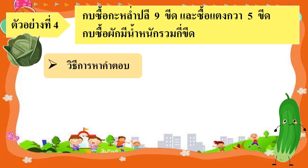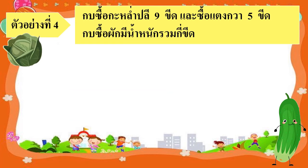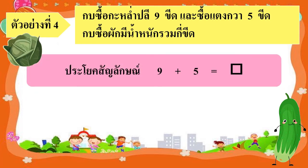วิธีการหาคำตอบ จากโจทย์ในข้อนี้ กบซื้อผักมีน้ำหนักรวม คำว่ารวมในที่นี้หมายถึงการบวก ดังนั้นวิธีการหาคำตอบคือการบวกนั่นเอง เราจึงสามารถเขียนเป็นประโยคสัญลักษณ์ได้ดังนี้ ประโยคสัญลักษณ์ 9 บวก 5 เท่ากับเท่าไร